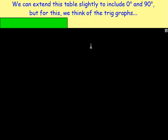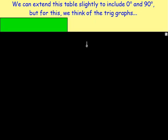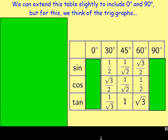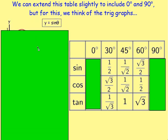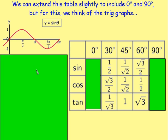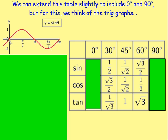We can take that a stage further to include 0 degrees and 90 degrees — for that, we use the graphs. Thinking about the sine graph, with degrees along the bottom — I've written it in radians: 90 degrees is π/2, 180 degrees is π, 270 is 3π/2, and 360 degrees is 2π radians. Sine of 0 degrees is just 0 — not negative 1 or 1, just 0.